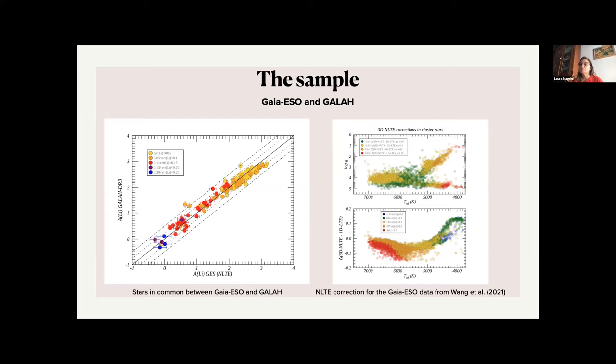And the comparison with GALAH is surprisingly good. So once corrected the Gaia-ESO abundances for 3D non-LTE correction, the agreement is good in the whole range of lithium abundances, from the very low lithium abundances to the high lithium abundances, and this is very reassuring.